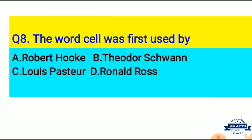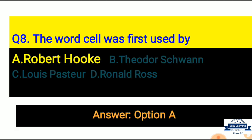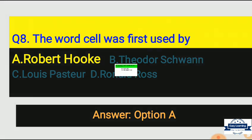Question 8: The word 'cell' was first used by — Option A: Robert Hooke, Option B: Theodore Schwann, Option C: Louis Pasteur, Option D: Ronald Ross. Correct answer is Option A — the word 'cell' was first used by Robert Hooke.